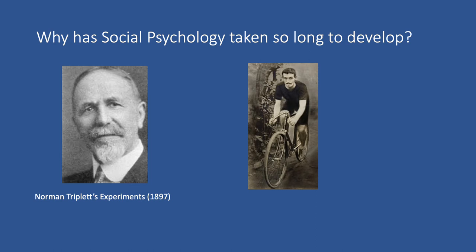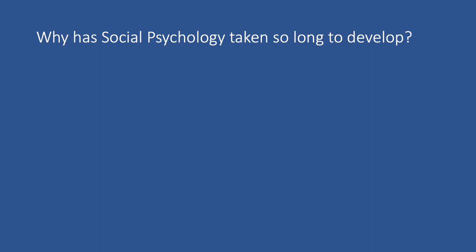It wasn't until sometime after that, in the early 1900s, that we started to see books written that had the title social psychology in them. There are a number of different reasons why there was resistance to thinking about human social behavior in a scientific way, and therefore it took social psychology a long time to develop.